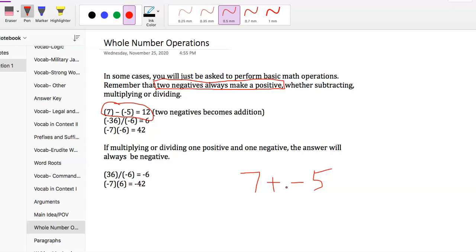Those turn into a positive, so we just do 7 plus 5. That's what you do. It doesn't matter what the numbers are. For example, if it was 3 minus negative 7, that double negative becomes 3 plus 7, which is 10. That's how you do it.